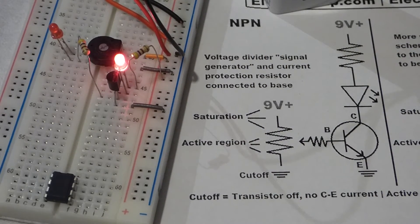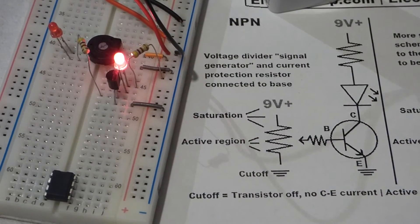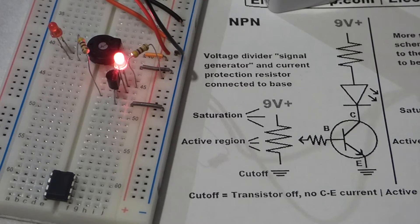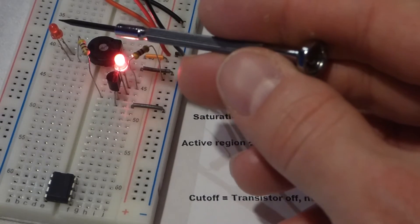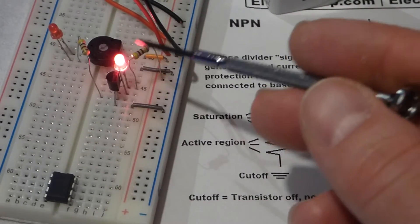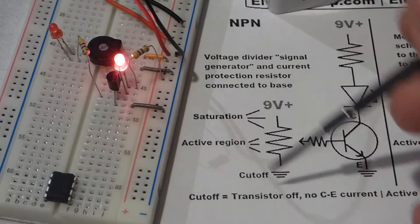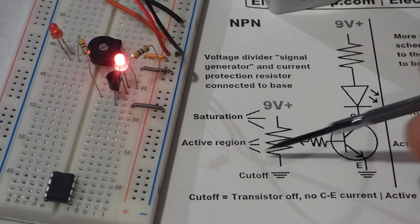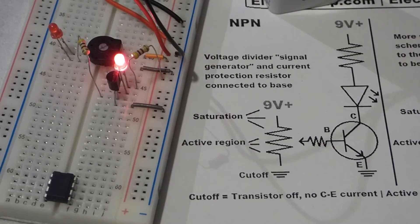But this LED is brightly lit. A lot more current's flowing through, and that's because of the current here. This is going to be a multiple amount of current—probably a tenth of a milliamp of current is going to let through maybe a hundred times more current through the collector. That's the active region.